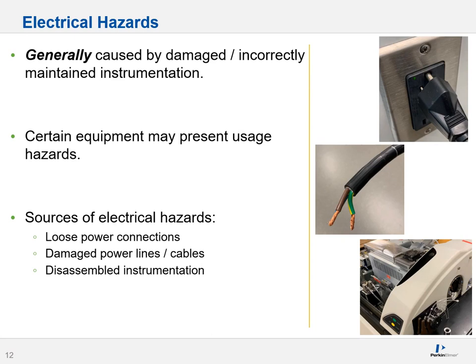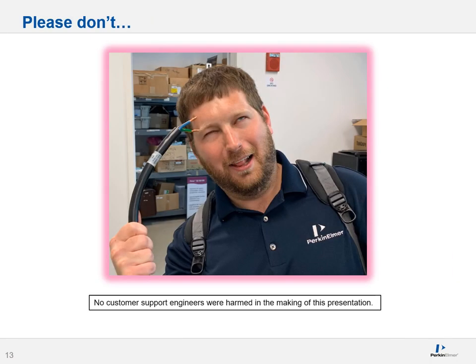Electrical hazards are generally caused by damaged or incorrectly installed or maintained instrumentation. In modern labs with modern equipment, electrical hazards aren't statistically all that common as long as instrumentation is used per the manufacturer's specifications. That being said, certain equipment may present usage hazards, such as anything with electrodes. Other sources of electrical hazards include loose or frayed power connections, damaged power lines and cables, and disassembled instrumentation being repaired. If you ever see a lockout/tagout tag, respect it. Don't bypass any locks or maintenance items your engineers have installed.